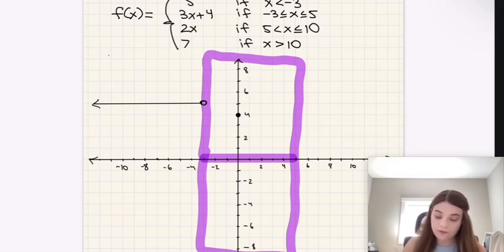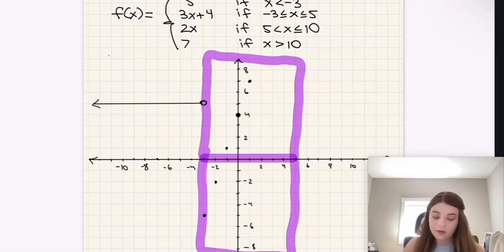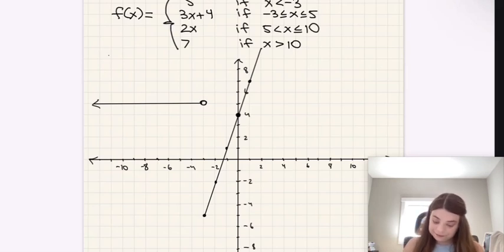We're going to start at 4, right here. And then we're going to go over 1 and up 3, because 3 is our slope. So we're going to have a point there, and then a point there, a point there, and a point there, like that. And so this is going to go a little bit off-grid, but that is okay. I'm not too concerned about that. That's going to keep going. And notice here, this one is a filled in circle, because at negative 3, this is included. And this would technically go all the way up until 5.